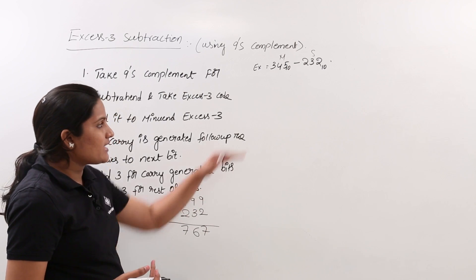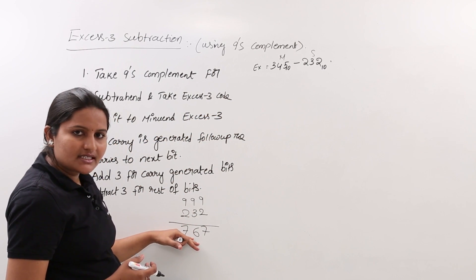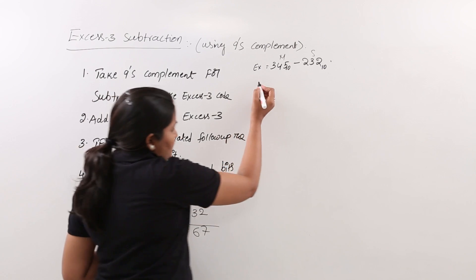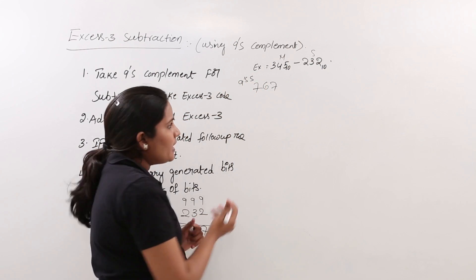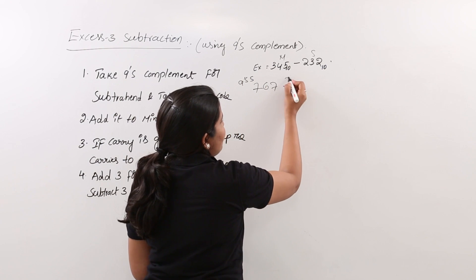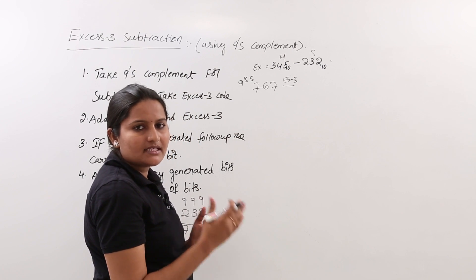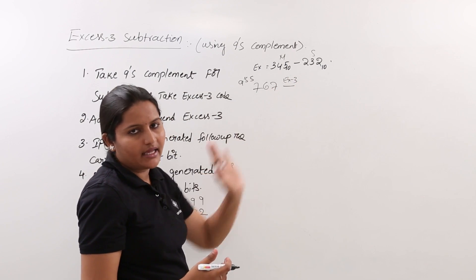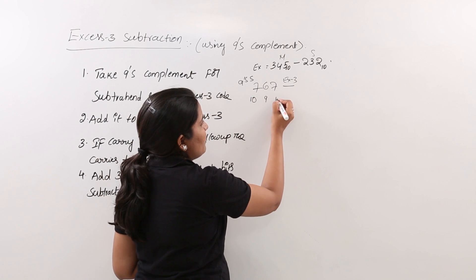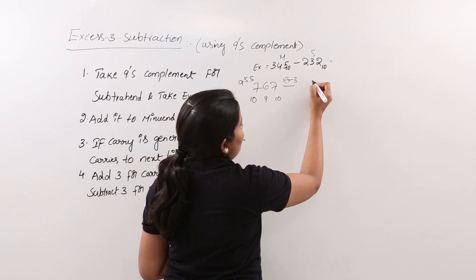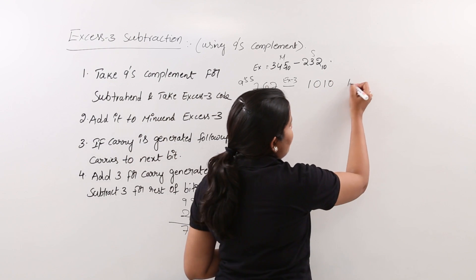Now we need to take XS3 for this 9's complement 767. For 7, add 3 to get 10; for 6, add 3 to get 9; for 7, add 3 to get 10. So the XS3 representation is: 7 → 1010, 6 → 1001, 7 → 1010. This is the XS3 code for the 9's complement of our subtrahend.